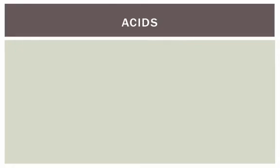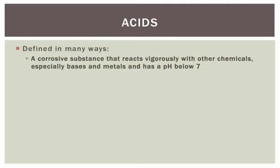Let's begin by discussing what an acid actually is. It can be defined in a lot of different ways, but basically speaking, it is a corrosive substance — meaning it burns things — that reacts vigorously with other chemicals, especially things like bases and metals. Most notably, it has a pH below 7. pH is a measurement of the concentration of H-plus ions. The higher that concentration, the lower the number is, so pH below 7 means we're dealing with an acid.